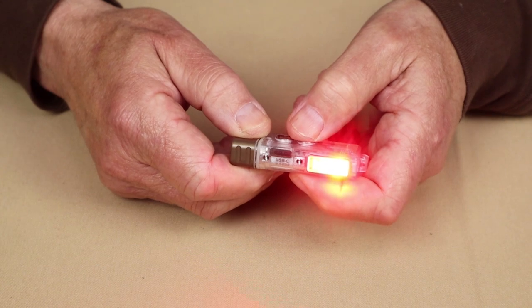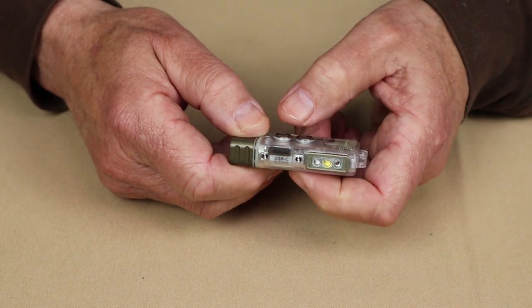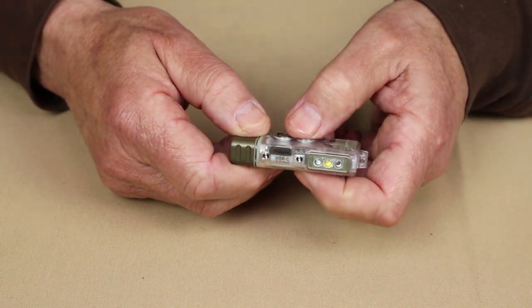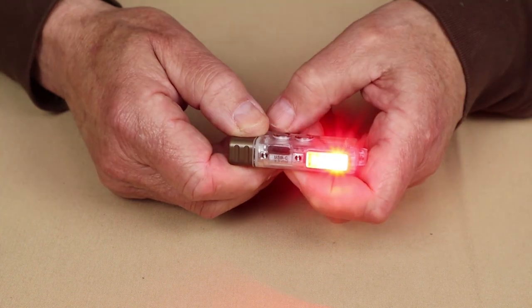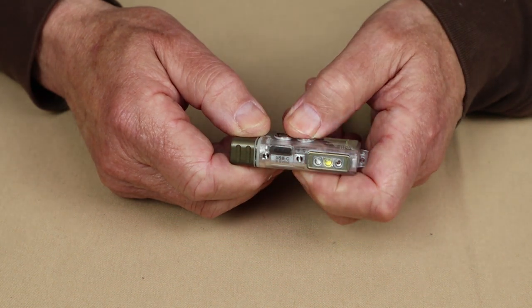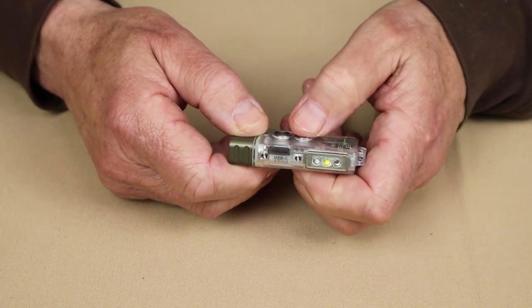If I press the secondary button quickly, it cycles through. As you can see that strobe, just a steady beacon, and then steady on. And I have to hold the button down to turn it off.